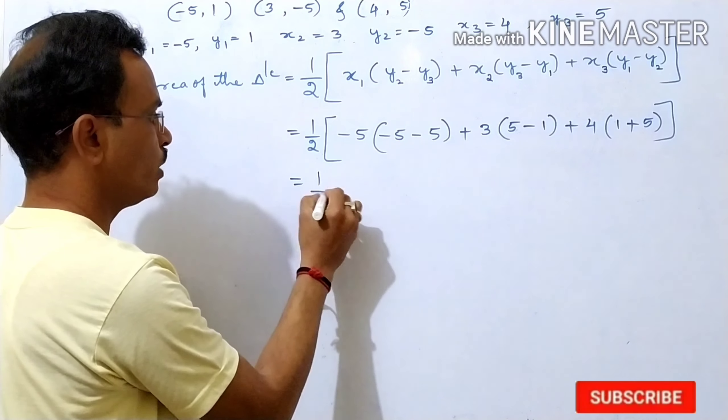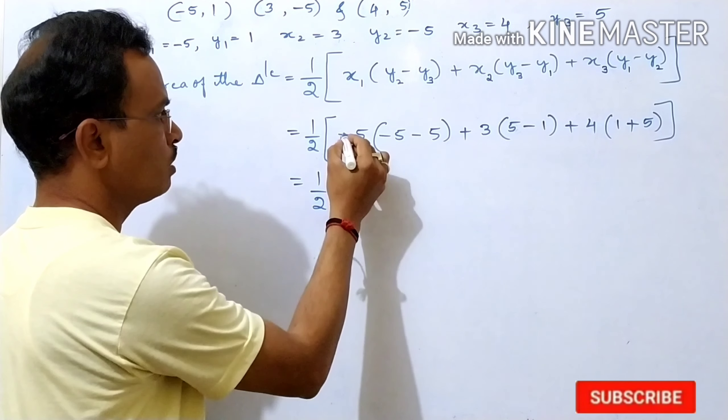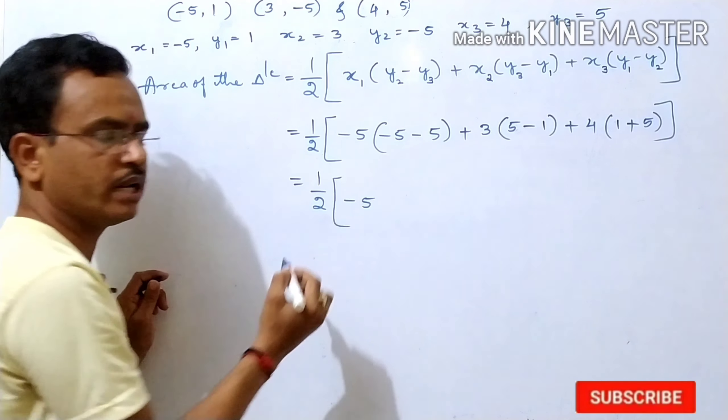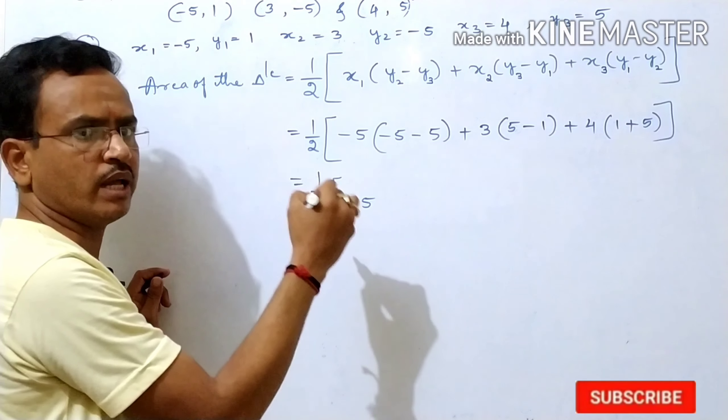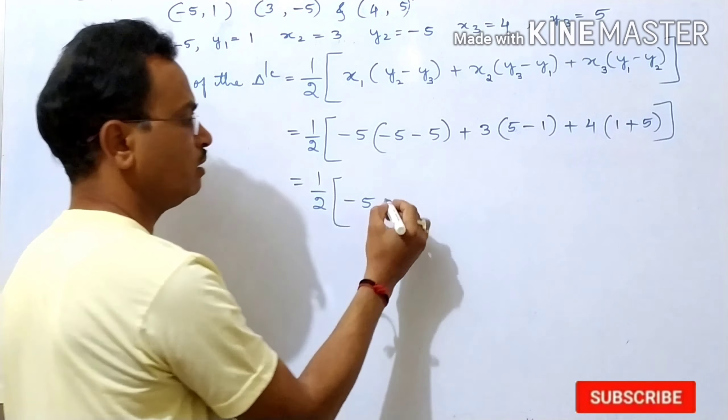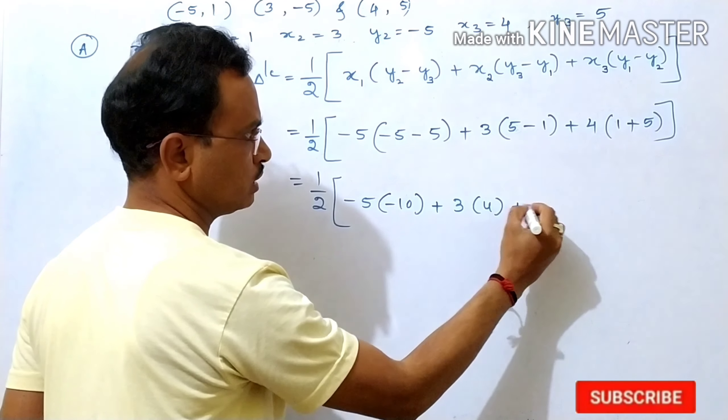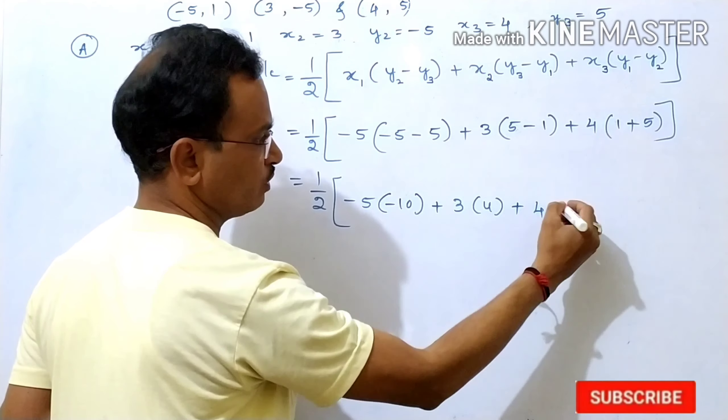Then 1 by 2 as it is. This minus 5, same. Here both are negative sign. Keep minus sign and add. Minus 5 plus 5, it become 10, plus 3 into 5 minus 1 is 4.